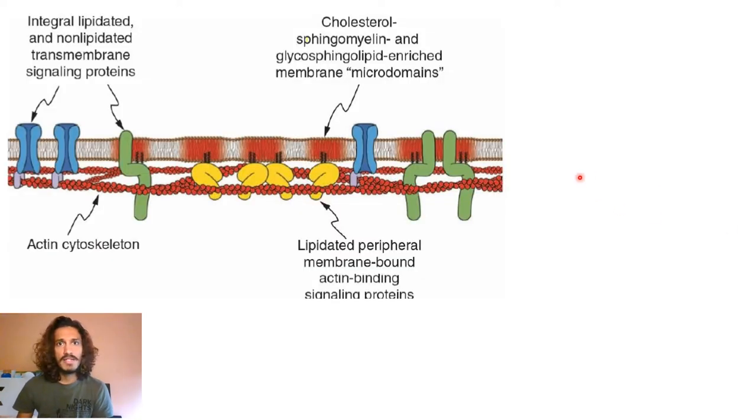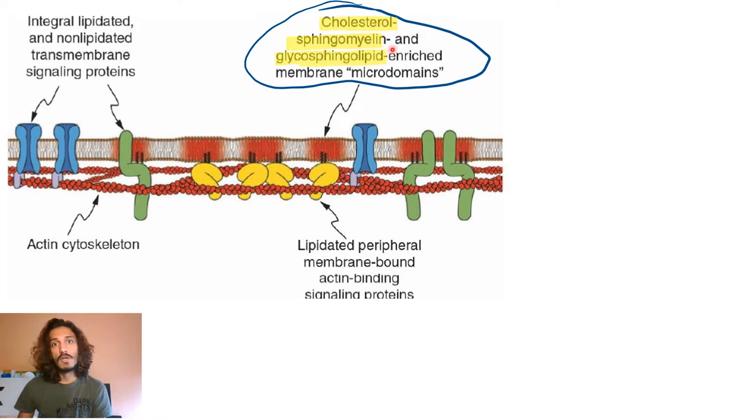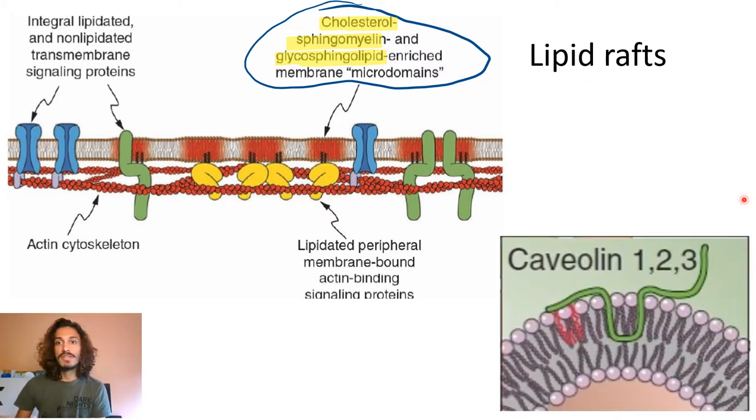Let's start off by discussing what is called lipid rafts. These are particular microdomains in your membrane which have cholesterol, sphingomyelin, and glycosphingolipid predominantly. They are rich in these things, and these microdomains are what are essentially called your lipid rafts.